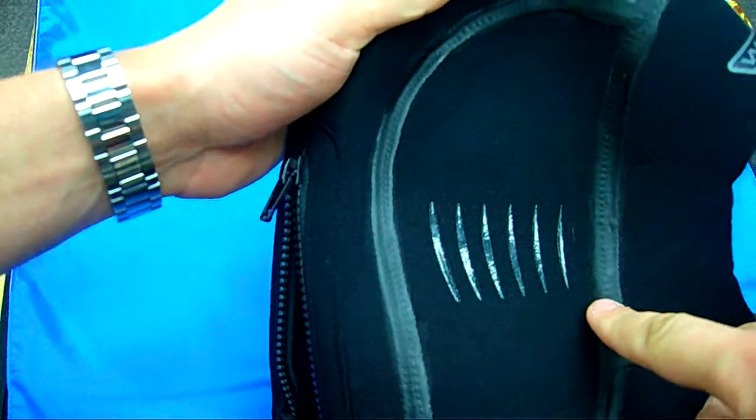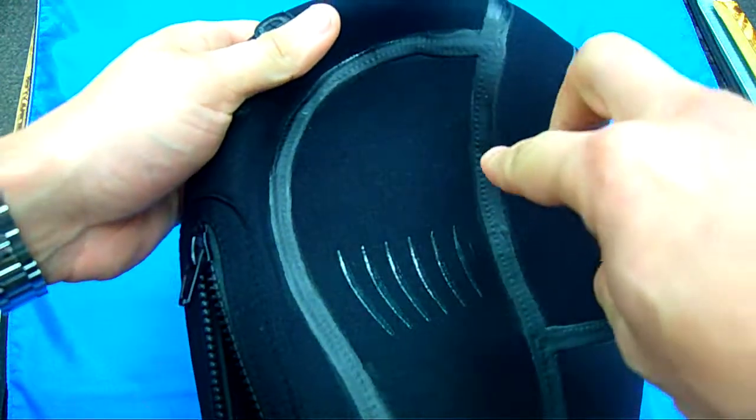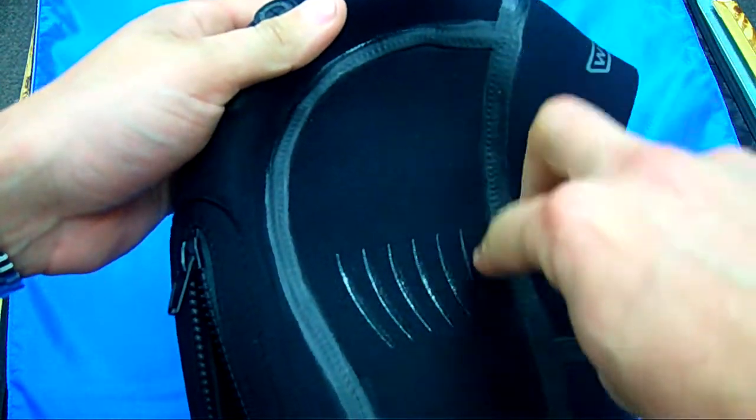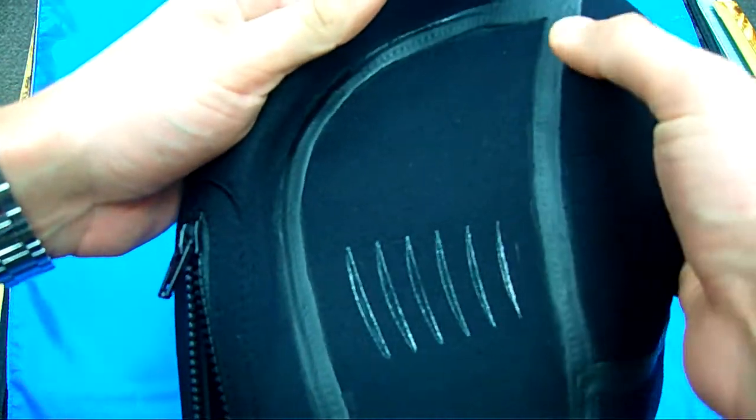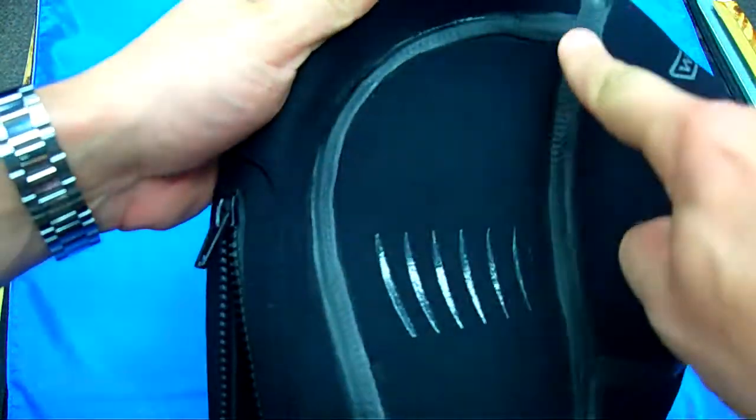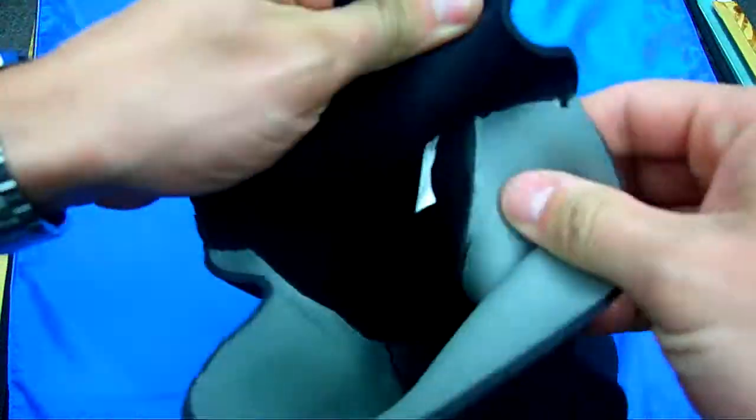It's actually blind stitched, which means that all these different panels, there's no sewing going on so there's no holes that you have to patch up. And then they take and glue over all the seams anyway just so there is no loss of water.